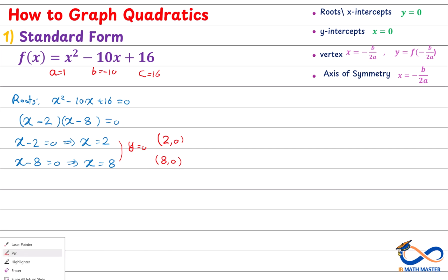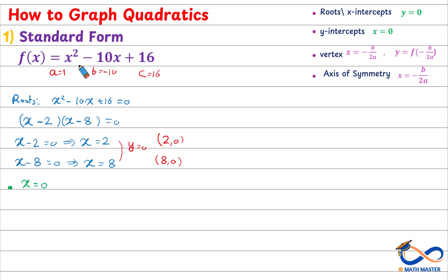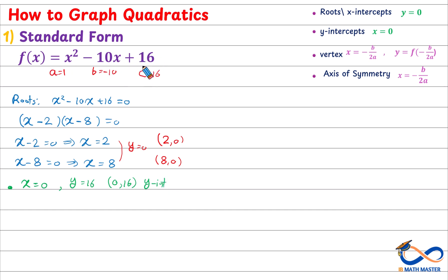Next we will find the y-intercept by replacing x by zero. When x is zero, we have zero minus zero plus 16, which is 16. So y will be 16. Therefore, the y-intercept will be (0, 16), which is generally this number c in the standard form.